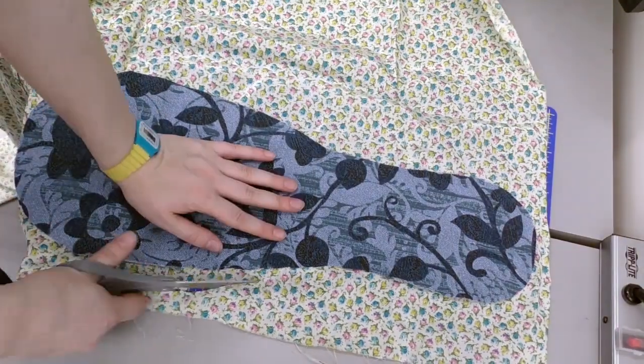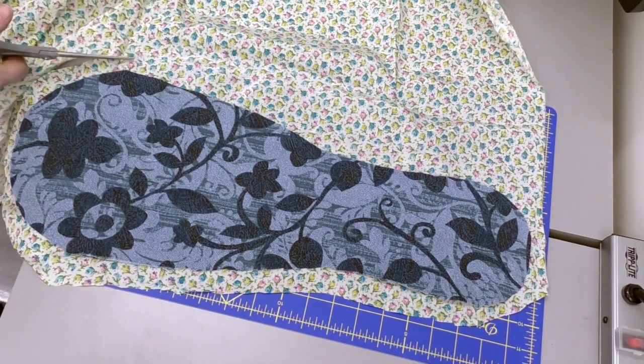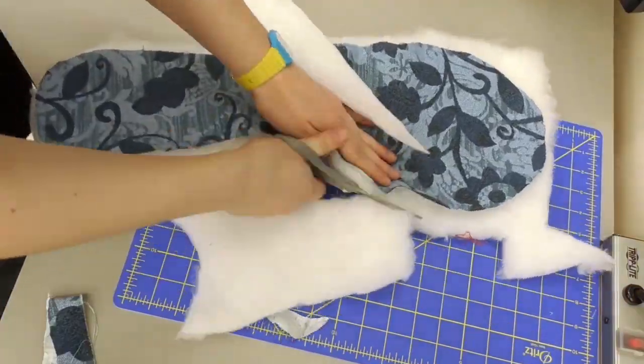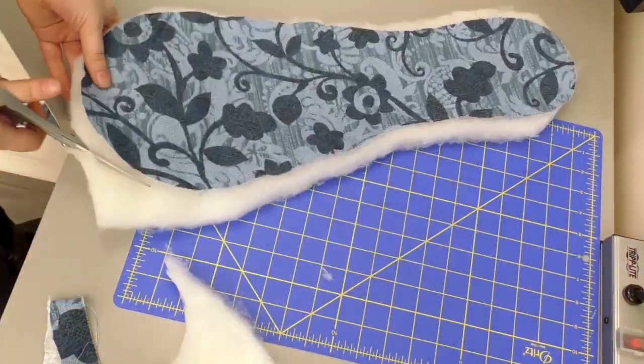Now you want to cut these three pieces out of your lining, batting, and outer fabric. I cut the lining a little bit bigger than I did the outer fabric because I wanted to leave extra room since we're going to be quilting it. I find that quilting things often cause them to shrink.